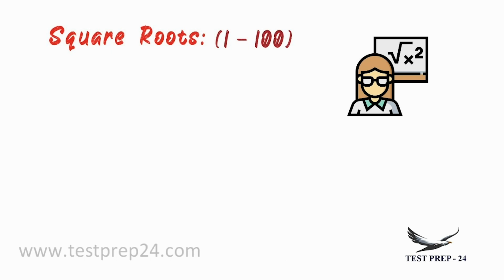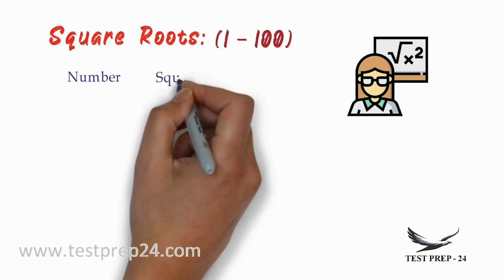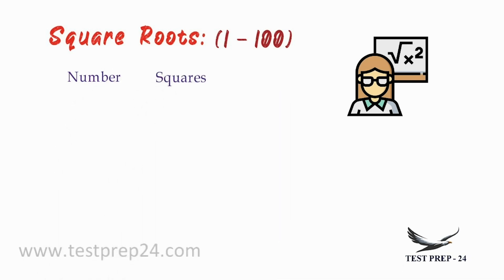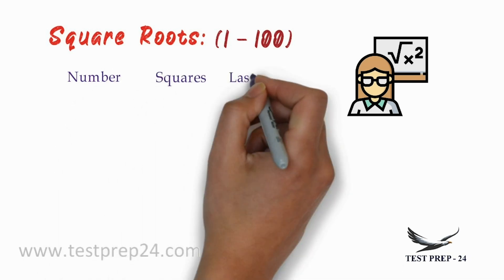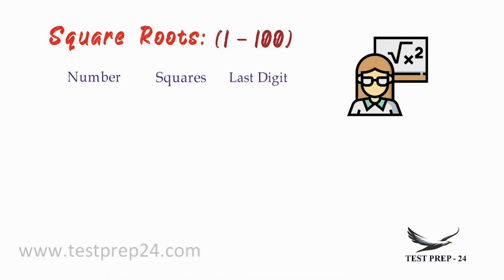Before finding the numbers, I will just write a small table. I will list out the numbers from 1 to 10, and I will write what is the value of the squares of those numbers and what is the last digit of that number.